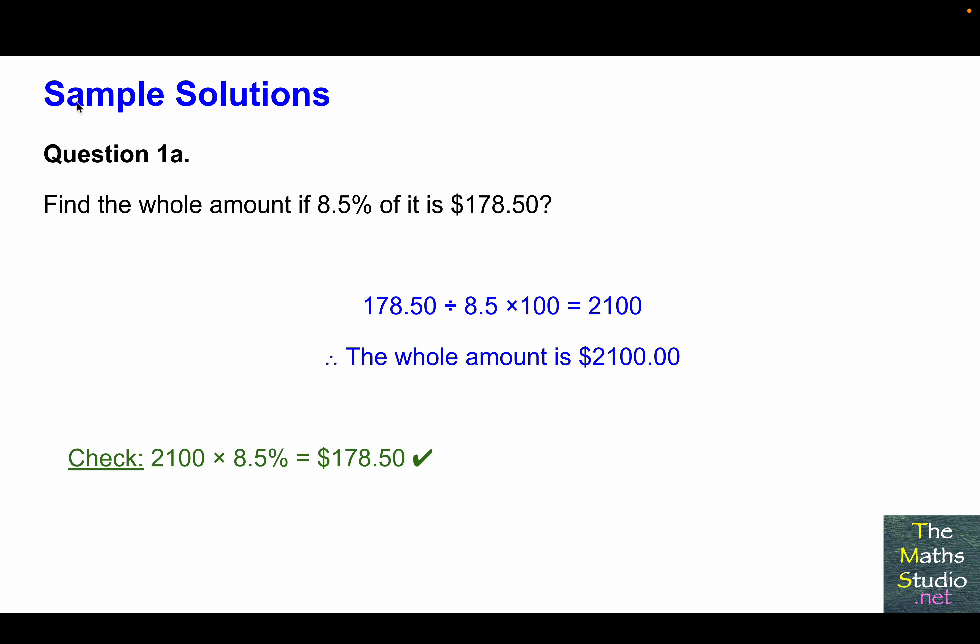Let's have a look at the sample solution for question 1, part A. Find the whole amount if 8.5% of it is $178.50. So starting off with $178.50, divide that by 8.5, multiply that by 100, and we get $2,100. Therefore, the whole amount is $2,100.